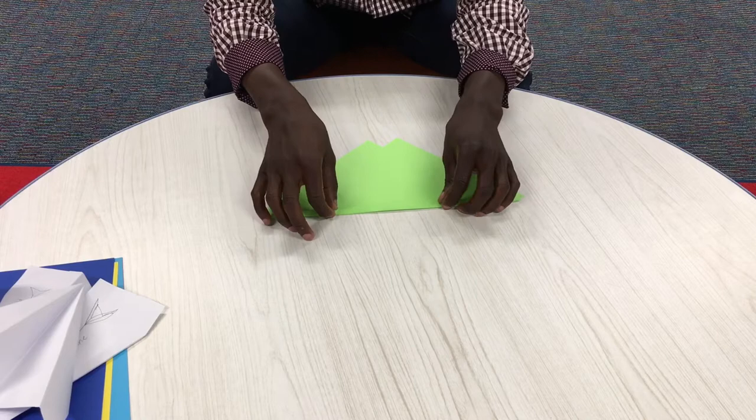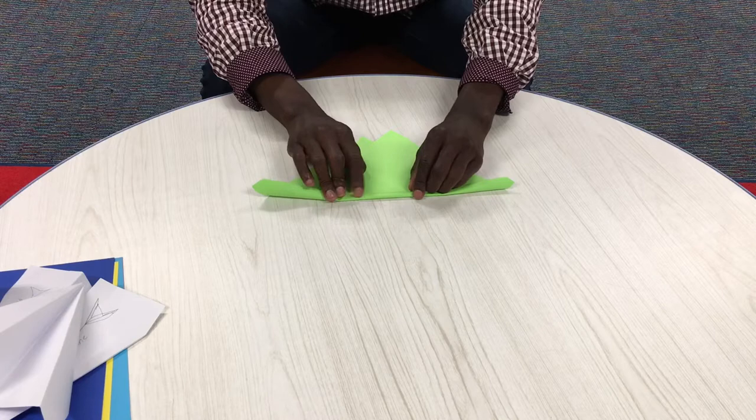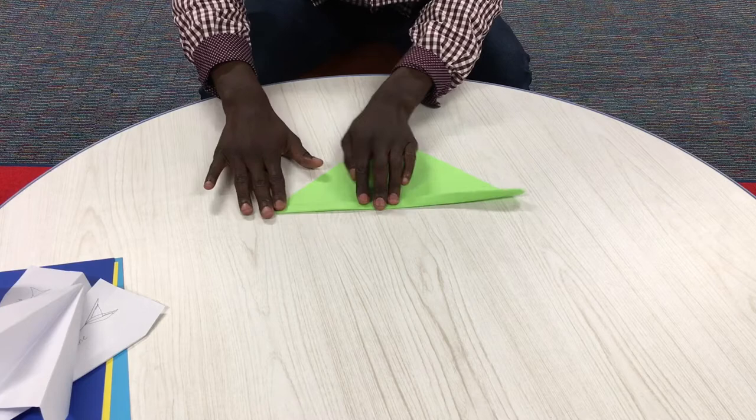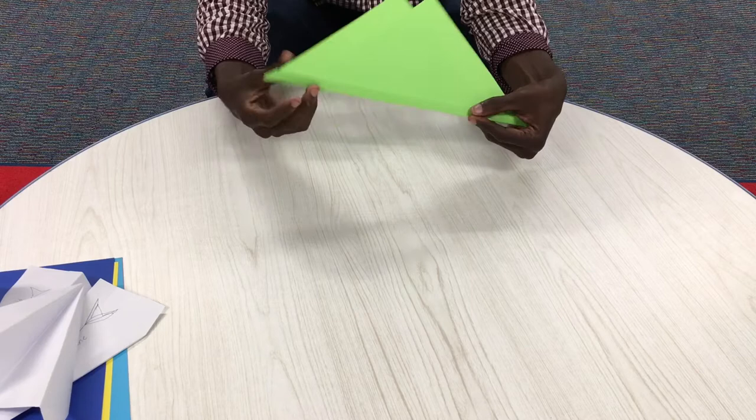This is where it gets a bit tricky because you're going to have to hold it down and fold it twice again, but this time it's going to be a bit bigger than the first fold. As you do so, you fold it down, make sure it's nice and crisp on each end. Looks like a bit of a paper boat, but we're not making boats, we're making planes.